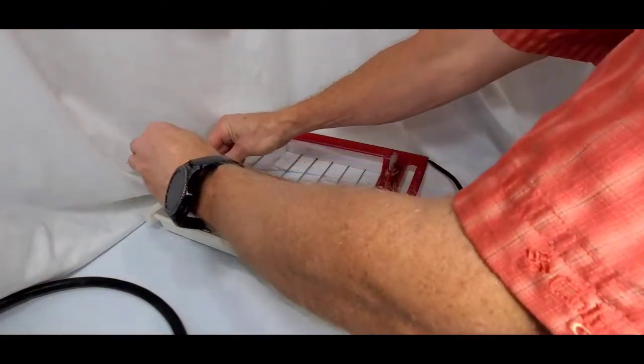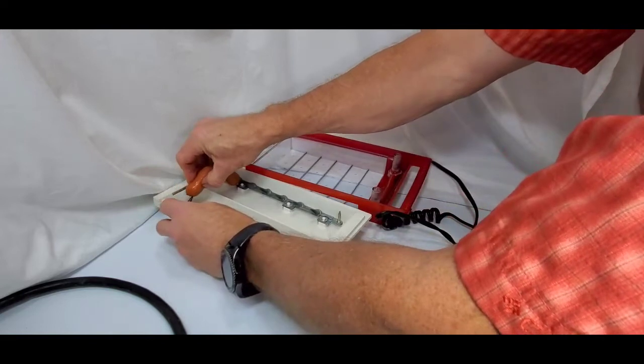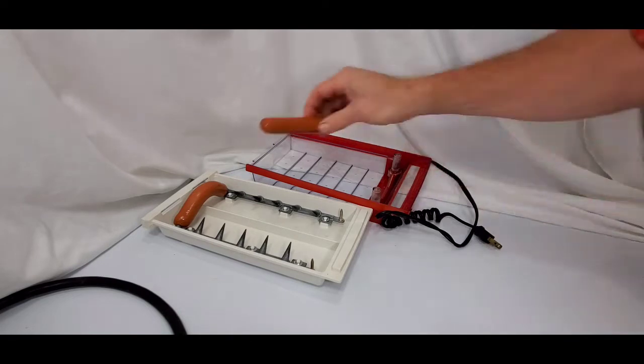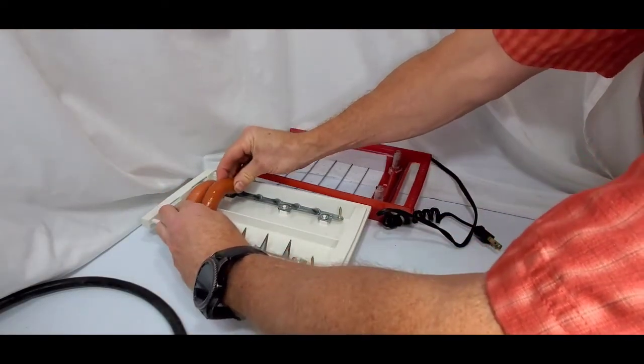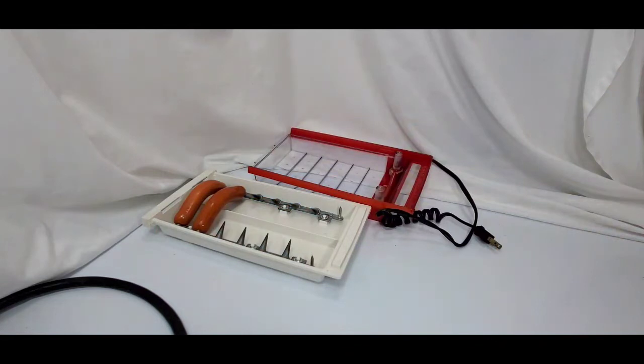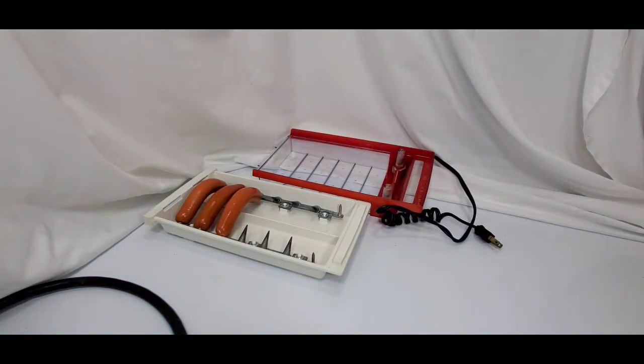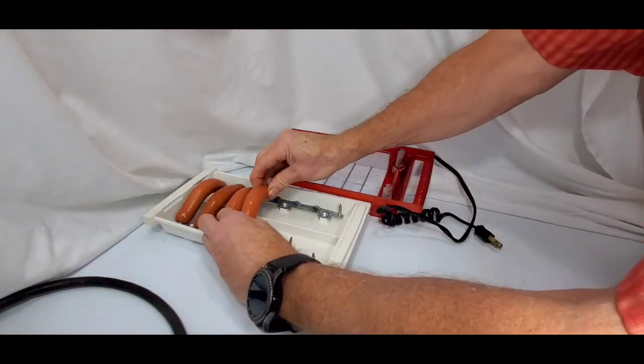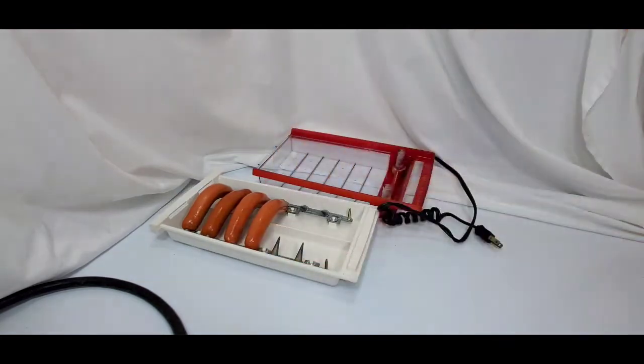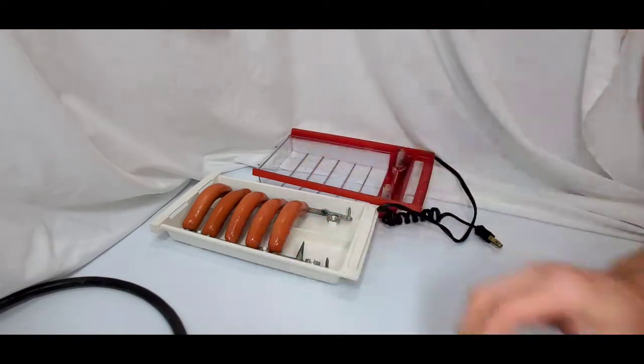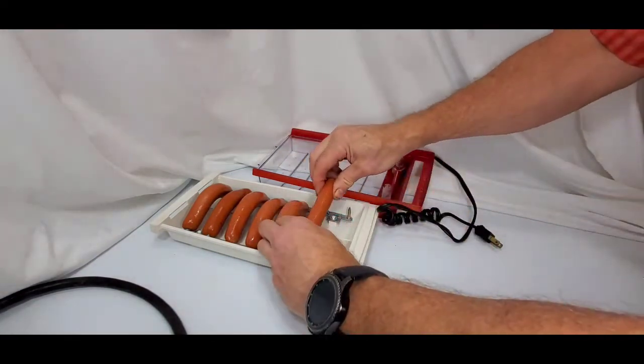So what you do is you take your hot dog and just skewer it on the end. This allows those ends to get cooked a little bit better and you can do up to six hot dogs.